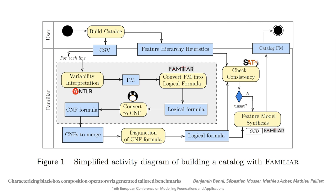Here is a simplified version of what happens behind the magic build-catalog process. We even put some effort to extract and simplify this process. As you can see, it involves a lot of different steps, successfully transforming feature models into various forms of logical formula, making use of external tools such as ANTLR, Tweety, or Sat4J, and even this final synthesis step makes use of heuristics and can be non-deterministic.